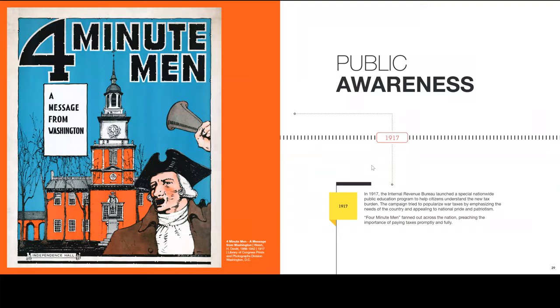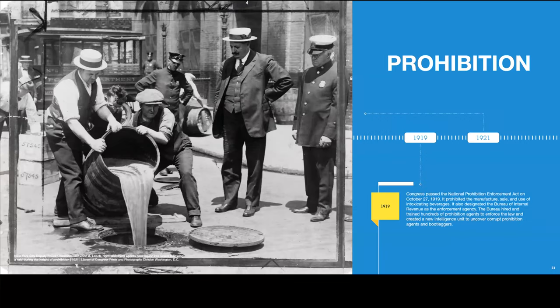Public awareness — the Four Minute Men: these are the guys responsible for going around the country getting the word out that there are new tax laws and things are changing. 1919, Prohibition: Congress passed the National Prohibition Enforcement Act on October 27, 1919, prohibiting the manufacture, sale, and use of intoxicating beverages. It designated the Bureau of Internal Revenue as the enforcement agency. The Bureau hired and trained hundreds of prohibition agents to enforce the law and created a new intelligence unit to uncover corrupt prohibition agents and bootleggers.